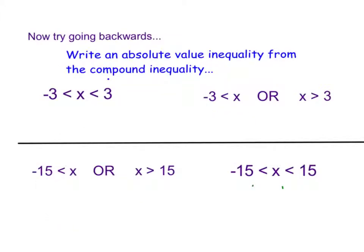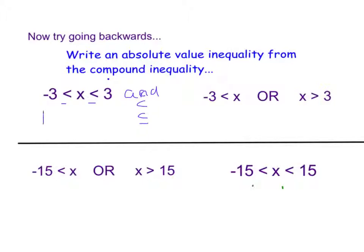As I said, we're going to be writing absolute value inequalities from compound inequalities. So I'm going to use the first easy examples that I did in part one to show you. These are both less than's — this is an and. So we know with and, we have to use a less than or a less than or equal to in our absolute value inequality. Since these were both less than's, we know that my symbol is going to be a less than.